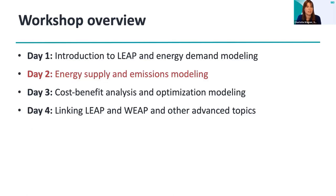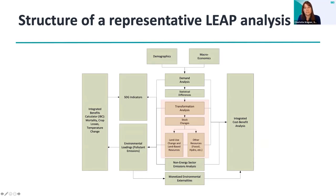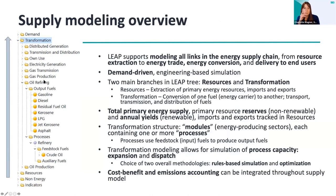Today we're going to talk about energy supply. Using the schematic you've already seen, all parts of the energy supply system are covered in LEAP: the transformation analysis, stock changes, land use change, land-based resources, and resource extraction of fossil fuel, hydro, etc. LEAP supports modeling all the links in the energy supply chain from resource extraction to energy trade, energy conversion, and delivery to end users.